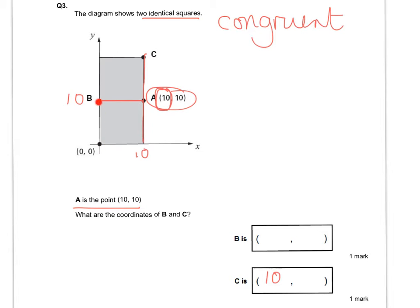Because I know that from there to there is 10, I know that from there to there is also 10 because they're the same size square, so I can put 20 here. With all my numbers in place I can see that B is going to be (0, 10) — pop that in — and C is going to be (10, 20) — pop that one in there.